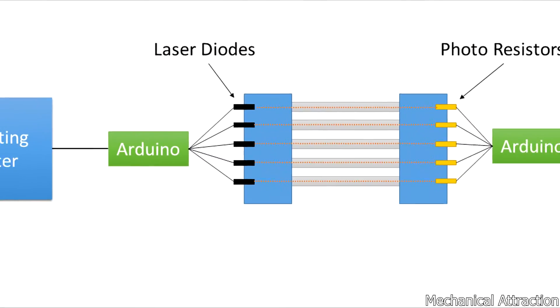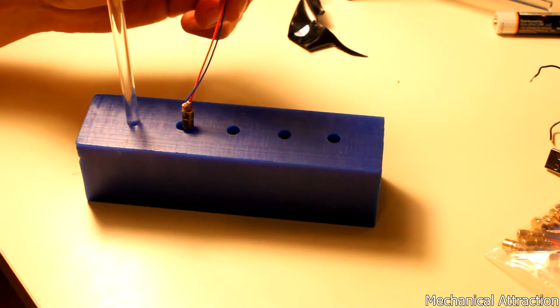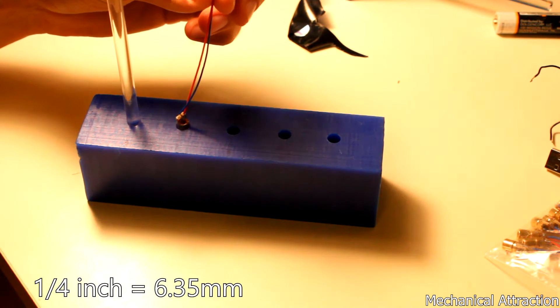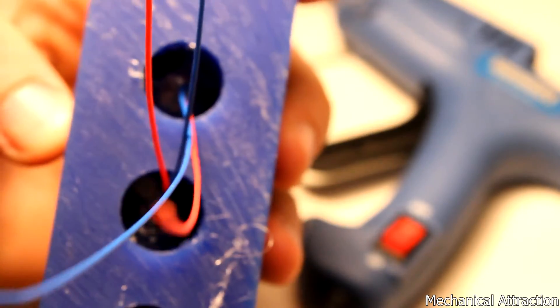For the transmitting side of the block where the laser diodes are at, I used six millimeter lasers that fit into the quarter inch hole which is 6.35 millimeters and hot glued them in.